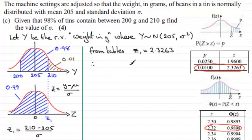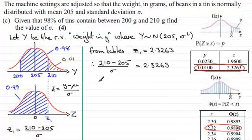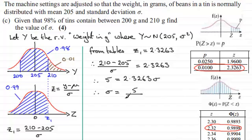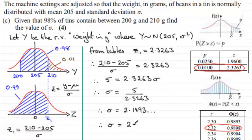Substituting our value of 2.3263 into the equation, we get: 210 minus 205 divided by sigma equals 2.3263. Rearranging, we have 5 on the numerator. Multiplying both sides by sigma gives 2.3263 sigma equals 5, and dividing both sides by 2.3263 gives sigma equals 5 divided by 2.3263, which is approximately 2.149. Rounding to three significant figures, sigma is 2.15.